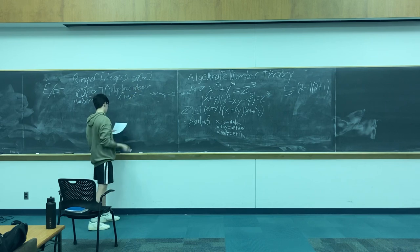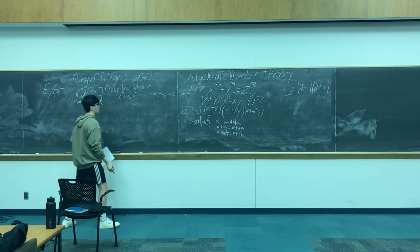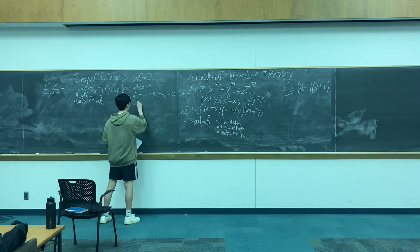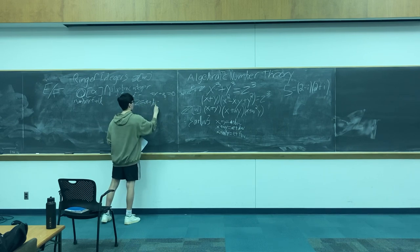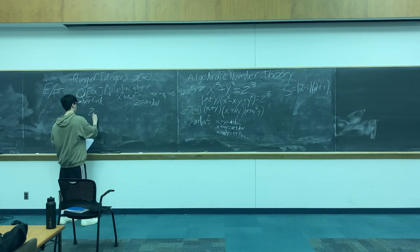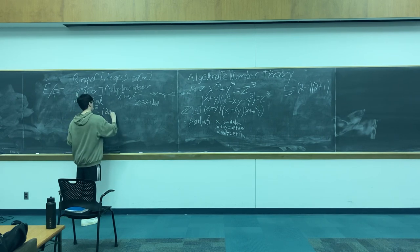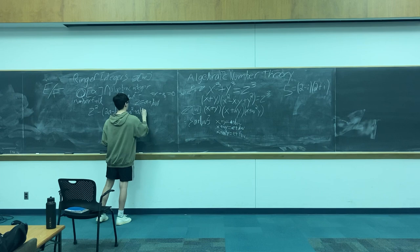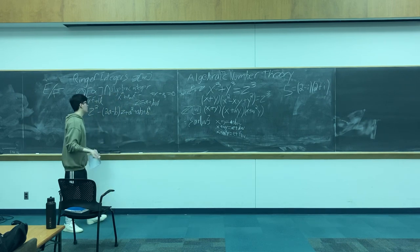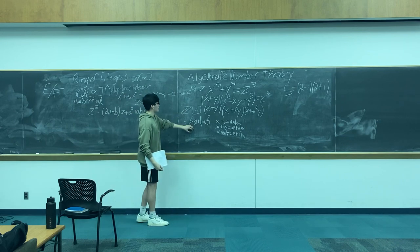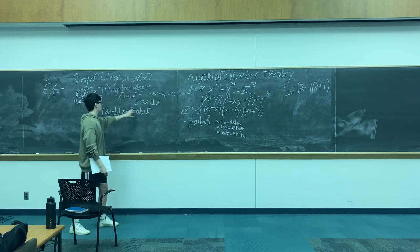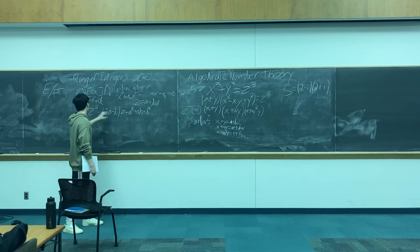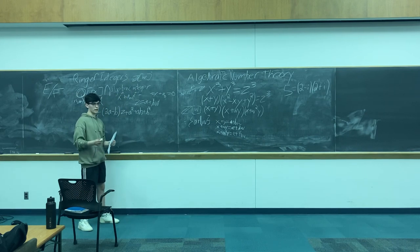Take that intersection — that's what a ring of integers is. You have some number field, which is a finite field extension of the rationals, and intersect that with all the algebraic integers, you get a ring of integers. For example, in the Z adjoined ω case, any element is of the form a plus bω, which is going to be a root of z² minus (2a minus b)z plus (a² plus ab plus b²). Any element in this set is of the form a plus bω, it's a root of this polynomial, it clearly has integer coefficients, and intersected with the rationals, we get Z adjoined ω.